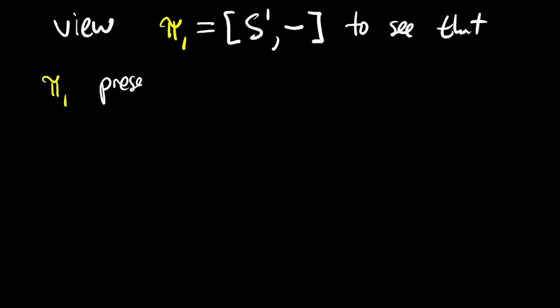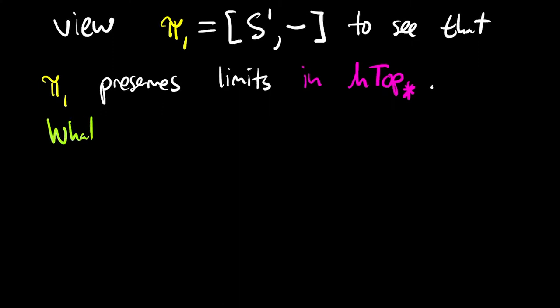And so if we view the fundamental group π₁ as homotopy classes of based maps out of the circle, then it's a representable functor, and therefore it preserves limits. But the limits that π₁ preserves from this perspective are limits in the homotopy category. And you might ask reasonably, what even are limits in the homotopy category? Or another question is, does π₁ preserve limits in the category of topological spaces? The answer is sometimes yes and sometimes no.